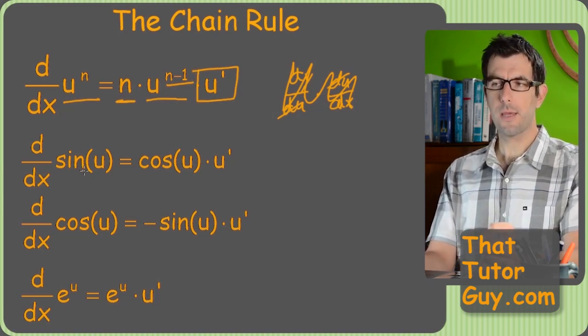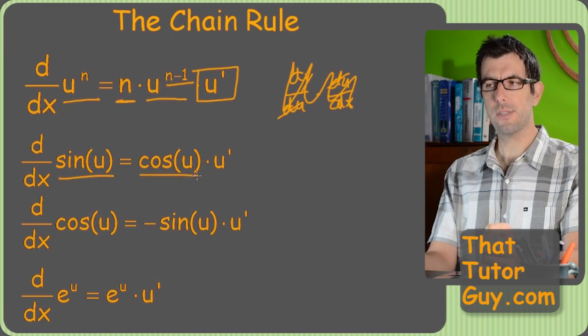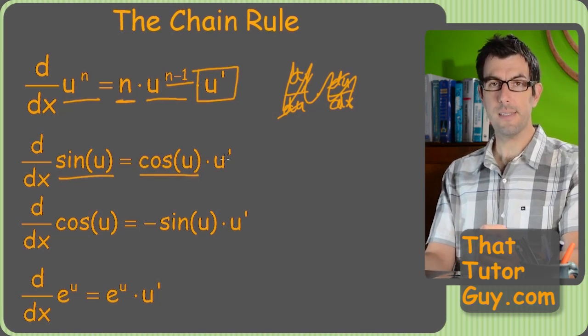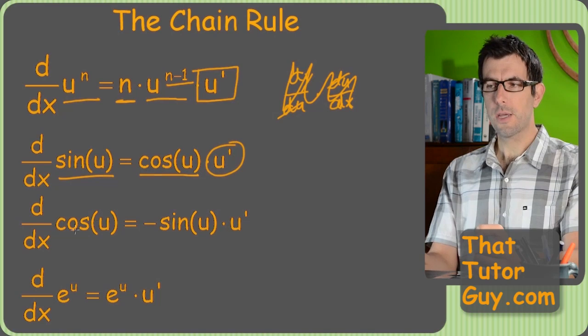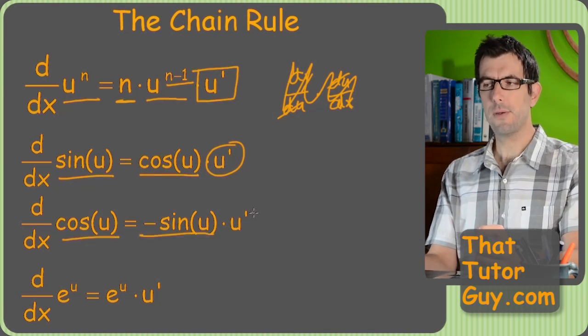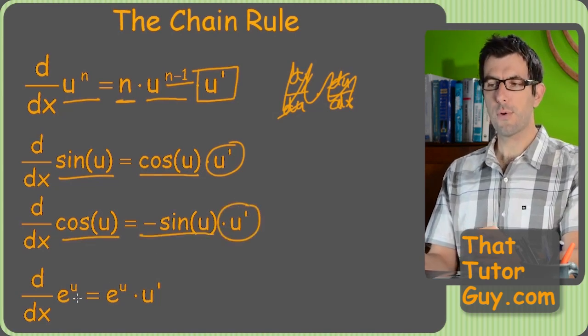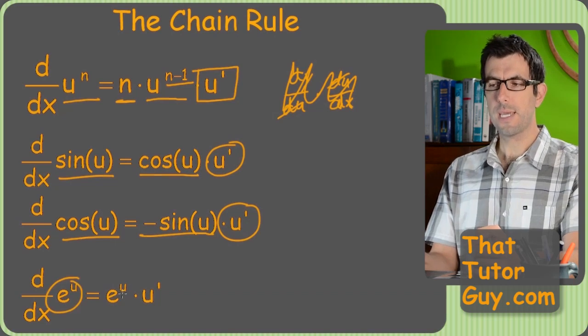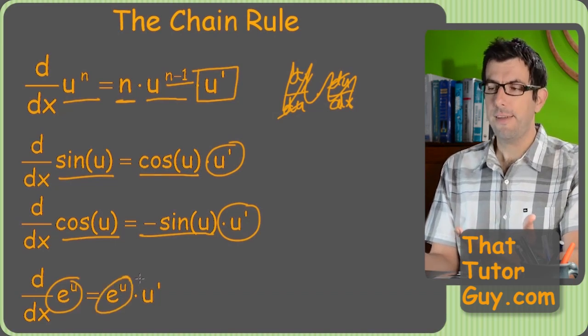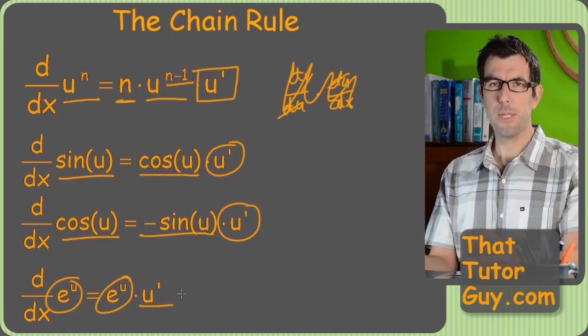Same thing happens with sine and cosine. Derivative of sine is still cosine. The difference is that we got a u prime on the end. Cosine same deal, got a u prime on the end. And then of course e to the u, once again its derivative is just itself but we've got a u prime on the end.